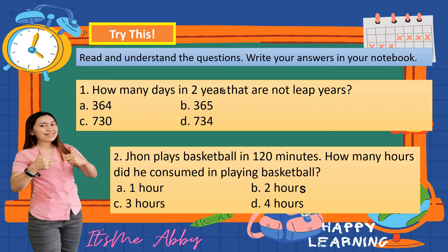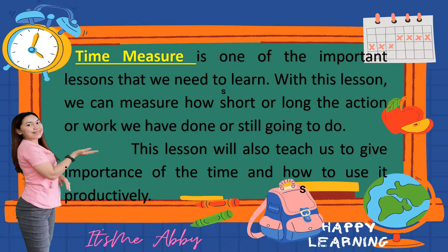The answer for number one is letter C, and the answer for number two is letter B. Very good, kids — you still remember our previous lesson. Time measure is one of the important lessons we need to learn. With this lesson, we can measure how short or long an action or work is, and it will teach us to give importance to time and use it productively.